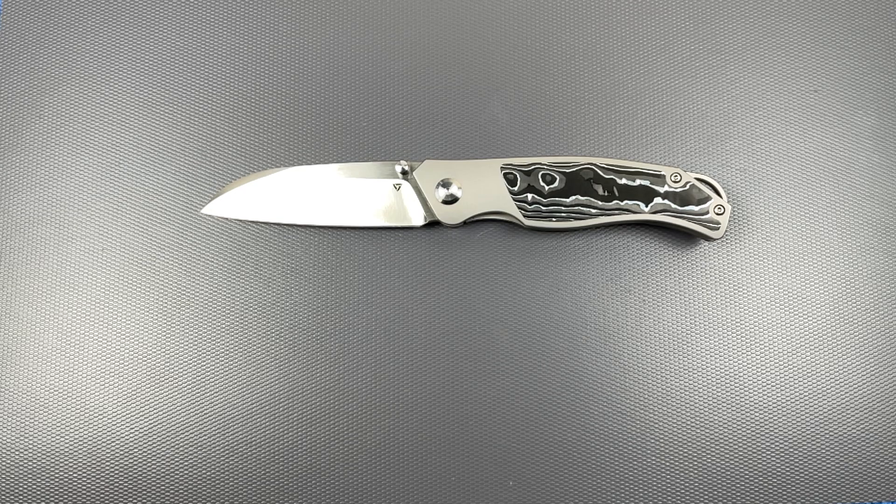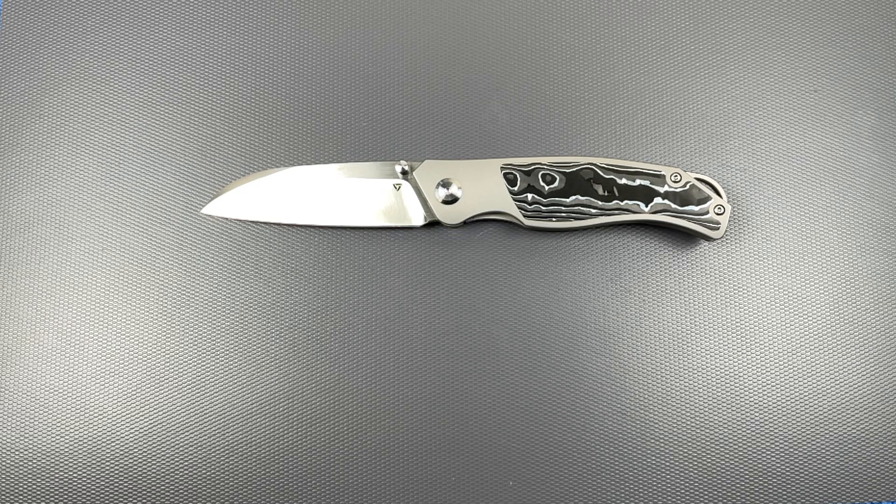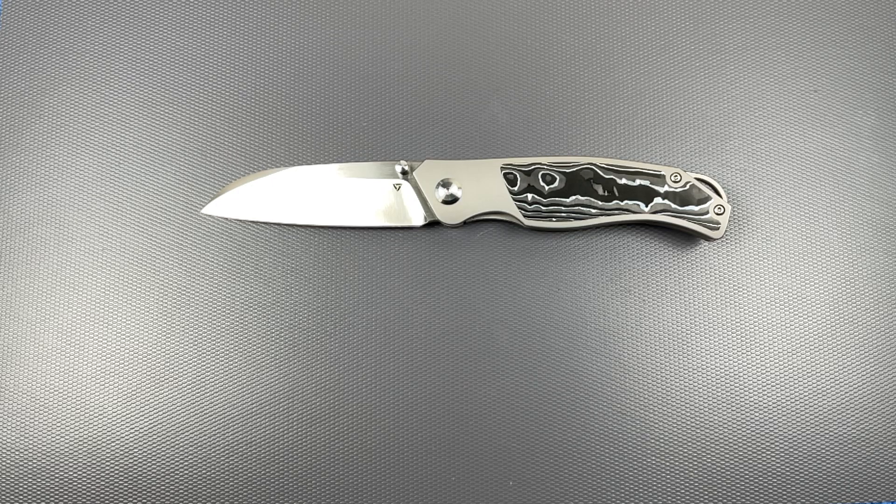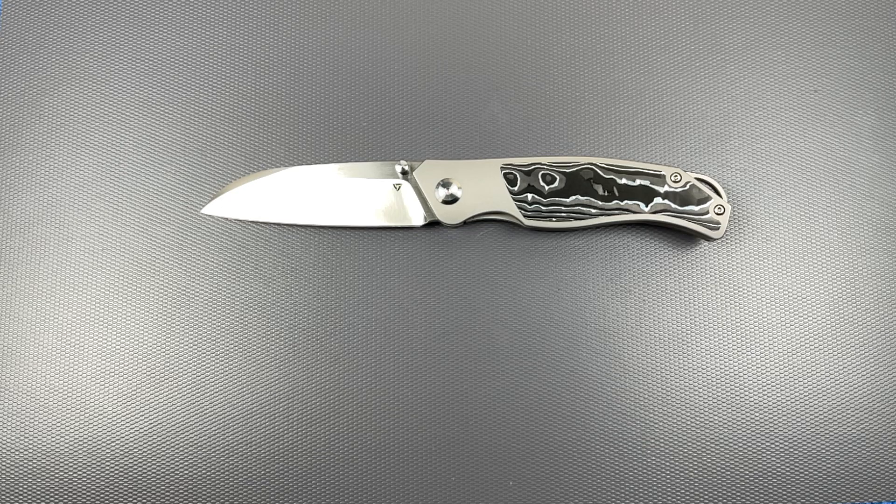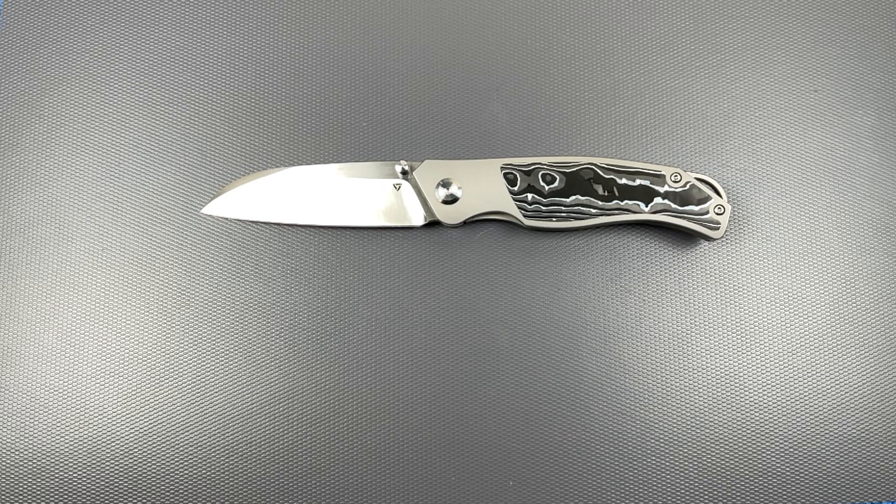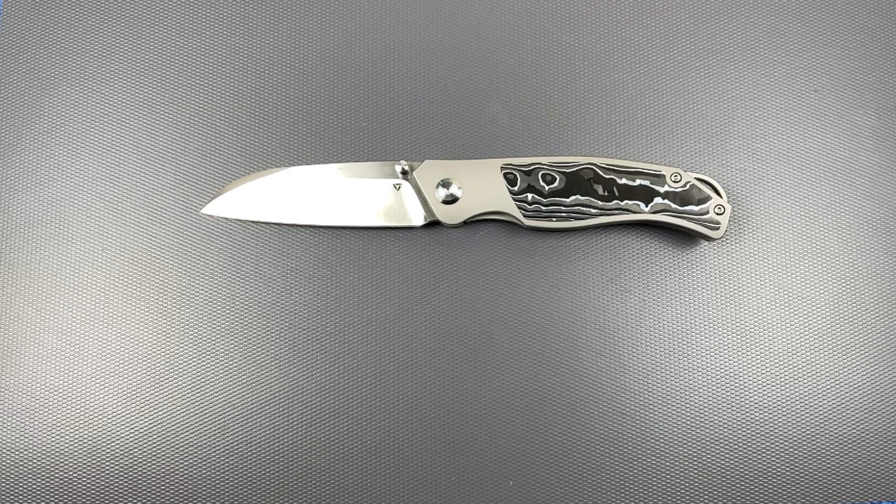Blade length is 3.25. They keep doing this. Blade HQ keeps switching around their cutting edge and their blade length measurements. Their blade length is 3.375. Their cutting edge is 3.25. Blade width, an inch. Blade thickness is 0.12. Blade material, CPM S90V. That's pretty darn nice.